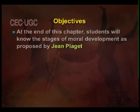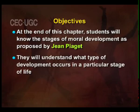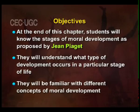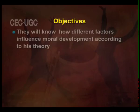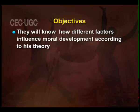Hello. The topic we are discussing today is Cognitive Theory of Moral Development as proposed by Piaget. The objectives of this module are: at the end of this chapter, students will know the stages of moral development as proposed by Piaget. They will understand what type of development occurs in a particular stage of life. They will be familiar with different concepts of moral development and they will know how different factors influence moral development according to his theory.